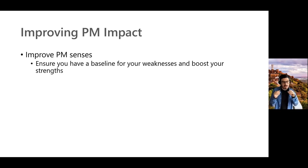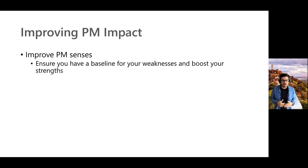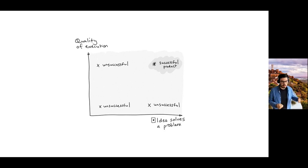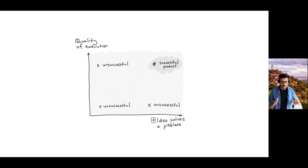So you want at least a baseline that doesn't hurt your career and doesn't hurt your impact. Make sure your weaknesses are at an acceptable level, then absolutely maximize your strengths. Be a three in solution or vision definition, but be at least a one or two in execution and analysis. Otherwise, what can often happen is your quality of execution could be awesome, but because you're so focused on execution — removing blockers, getting things done, compromising scope, aligning stakeholders — the idea doesn't even solve the problem anymore.